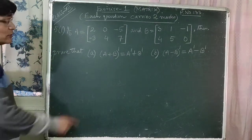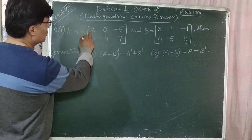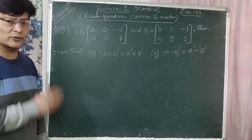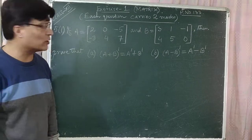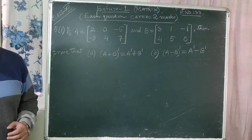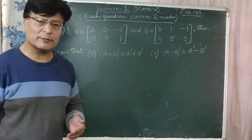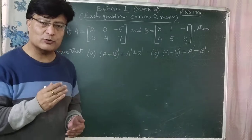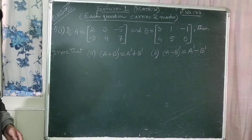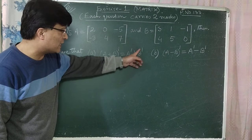If A is equal to the matrix of order two cross three — first row: 2, 0, -5; second row: -3, 4, 5 — and B is equal to — first row: 3, 1, -1; second row: 4, 5, 0 — also a two cross three matrix. You have to prove that (A+B) dash is equal to A dash plus B dash, and (A-B) dash is equal to A dash minus B dash.